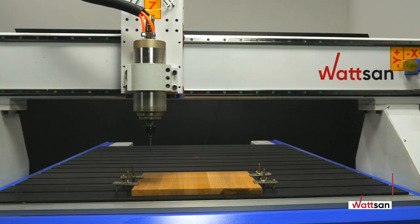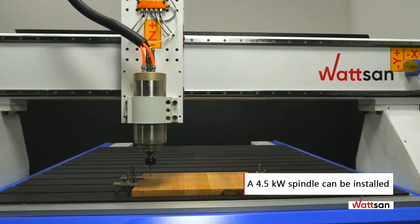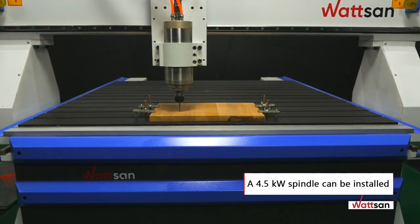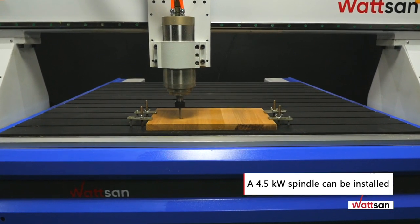If required, a 4.5 kilowatt spindle can be fitted, which speeds up work on some materials and is even suitable for machining aluminum.